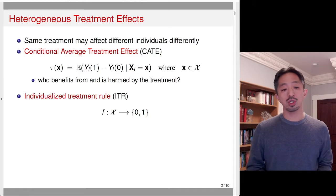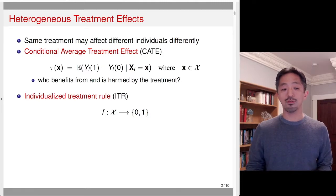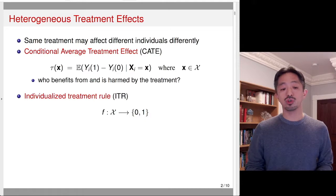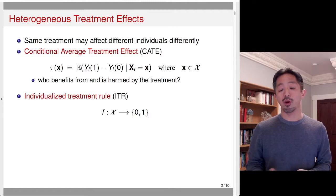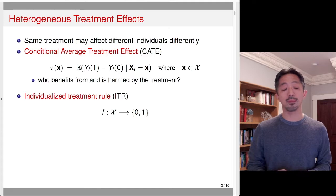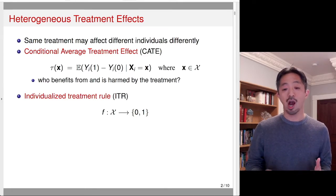Once we estimate the conditional average treatment effect, we might also be interested in constructing a so-called individualized treatment rule, ITR. An individual treatment rule is a function that maps from the support of the distribution of observed characteristics x to the recommendation of whether someone should be treated or not — 0 or 1. So depending on your characteristics, the ITR will tell you whether you should receive the treatment or not.